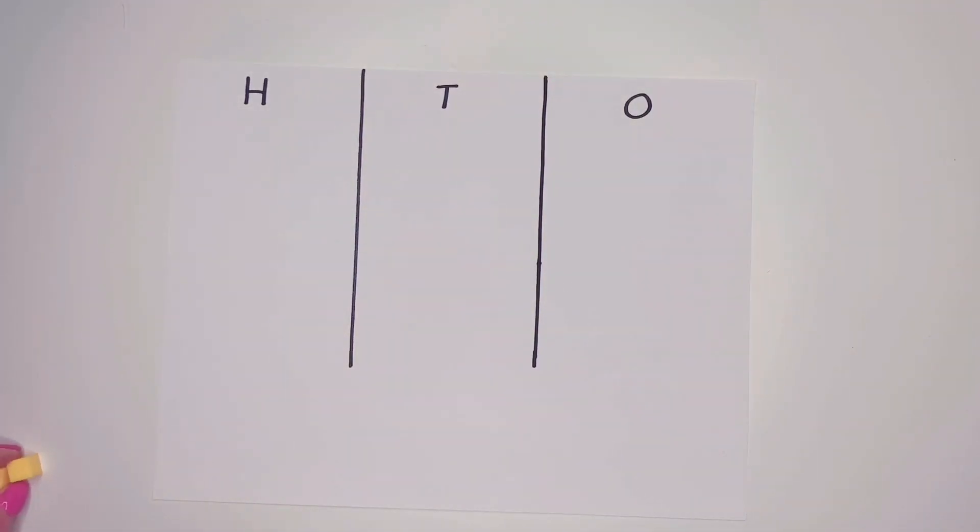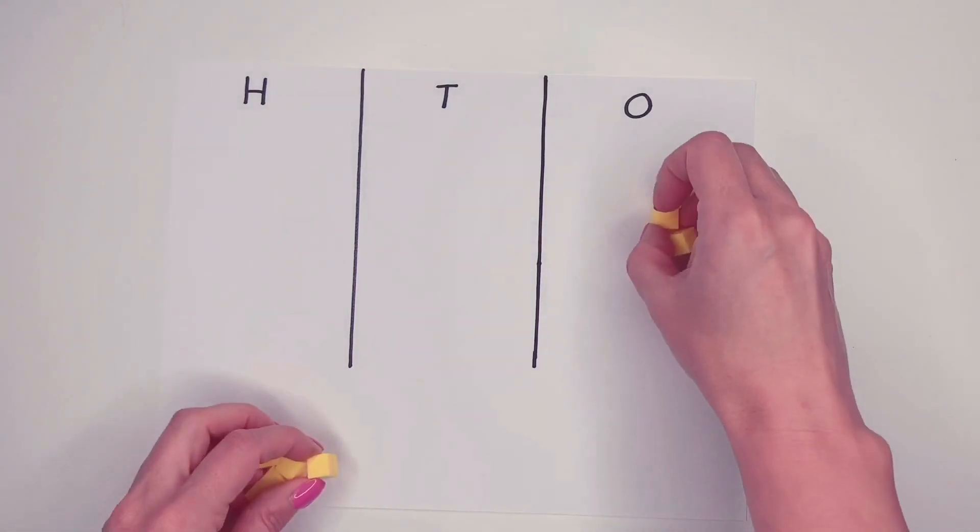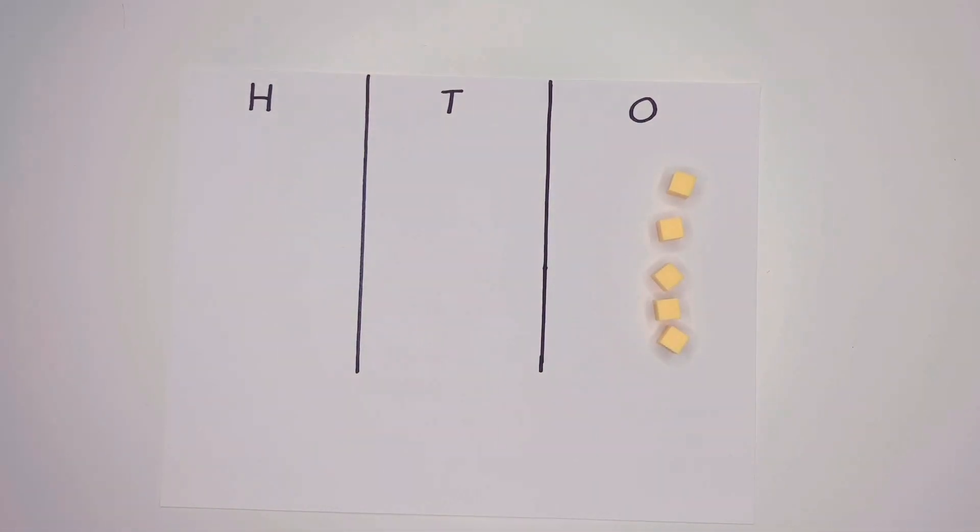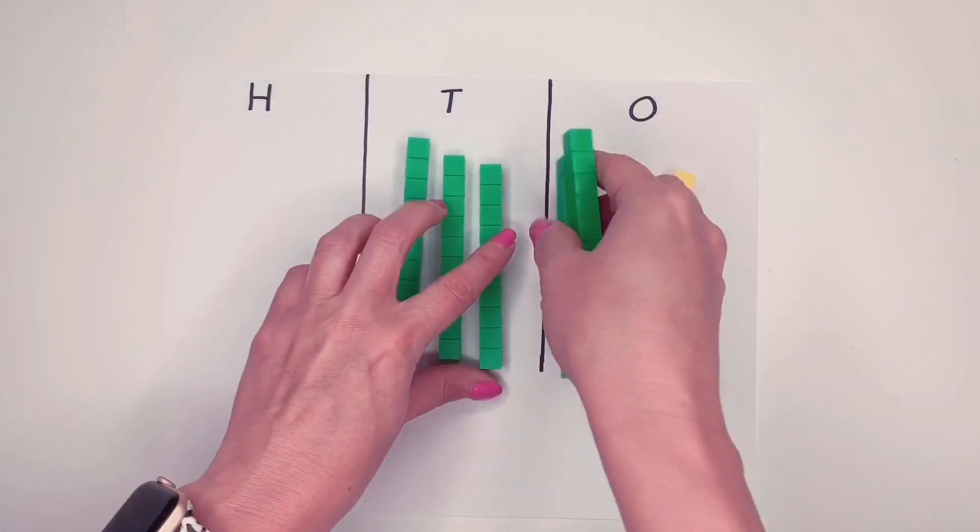So first let's talk about what our expanded form looks like when we have an HTO chart. So I'll just do a few for an example.